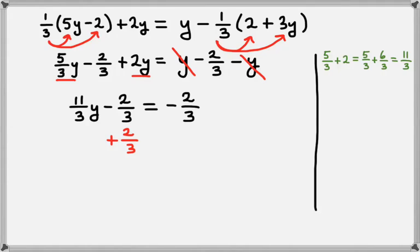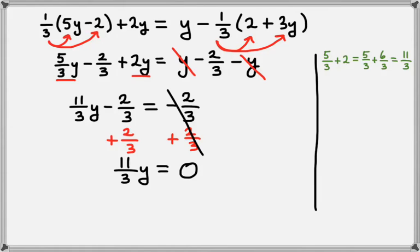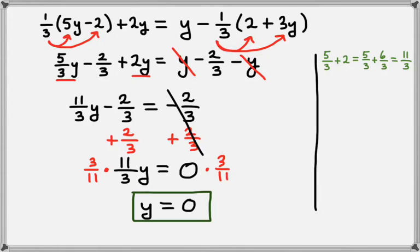Now we can add 2 thirds to both sides to get the y term by itself. On the left hand side that leaves us with 11 thirds y, and on the right hand side those numbers cancel, leaving us with 0. Now we want to get y by itself, so we can multiply by the reciprocal of 11 thirds, which is 3 elevenths, on both sides. On the left that just leaves us with y, and on the right we have 0 times 3 elevenths, which is 0. So our final answer is y equals 0.